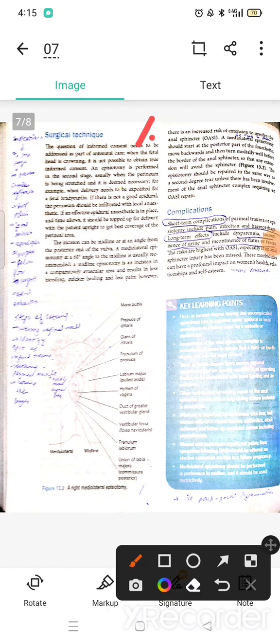Episiotomy is performed in the second stage when the perineum is stretched. It is very necessary, for example, if the delivery needs to be expedited for fetal bradycardia.